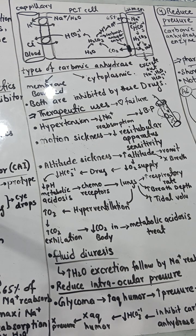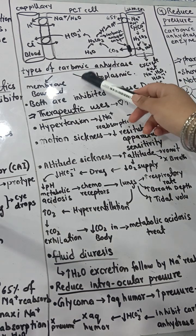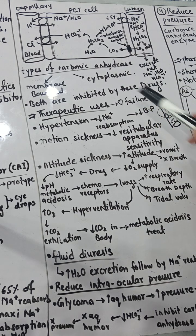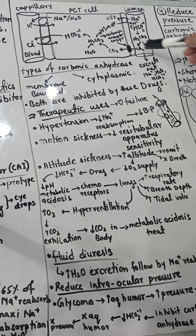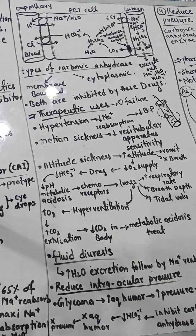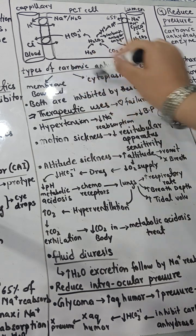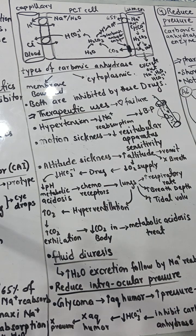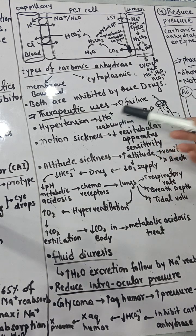The therapeutic uses of CAI include heart failure and hypertension — both involving decreased sodium and water reabsorption to lower blood pressure. There are two types of carbonic anhydrase enzyme: membrane-bound and cytoplasmic. The CAI drug blocks both types. They are used to decrease stress on the heart, decrease blood pressure, and treat hypertension.